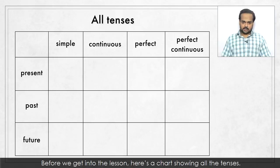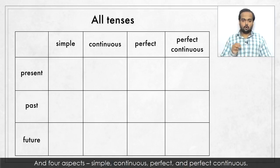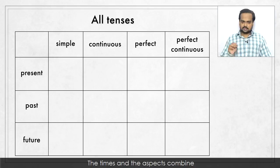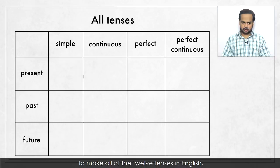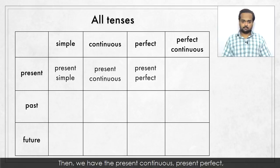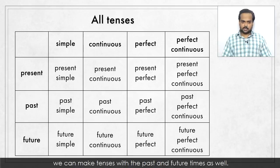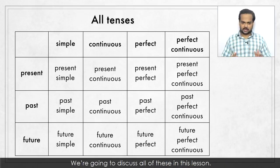Before we get into the lesson, here's a chart showing all of the tenses. There are three times – present, past, and future – and four aspects – simple, continuous, perfect, and perfect continuous. The times and the aspects combine to make all of the twelve tenses in English. The present time and the simple aspect make the present simple tense. Then we have the present continuous, present perfect, and the present perfect continuous. In the same way, we can make tenses with the past and future times as well. We're going to discuss all of these in this lesson.